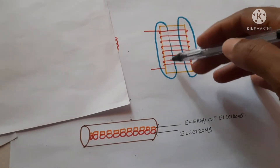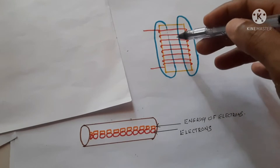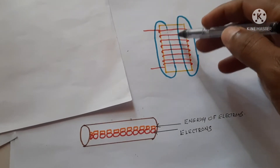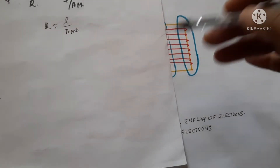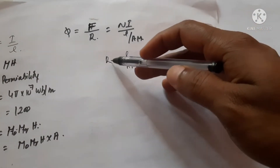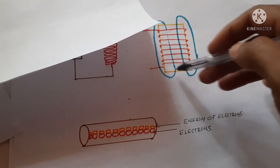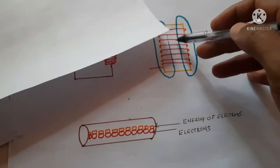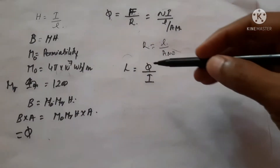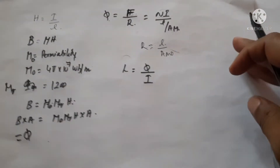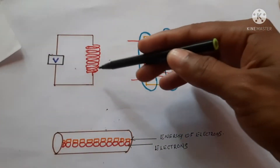Permeability and reluctance are opposites. The reluctance formula is R = l / (A × μ₀). If the area of the core is large, it can support more flux, so reluctance decreases. If the length of the core is large, the flux has to travel a longer path, so reluctance increases. Reluctance decreases when area increases, and also decreases when permeability increases.